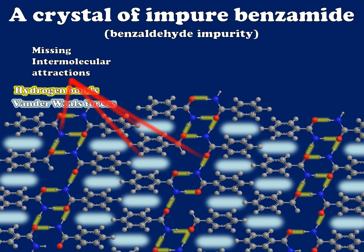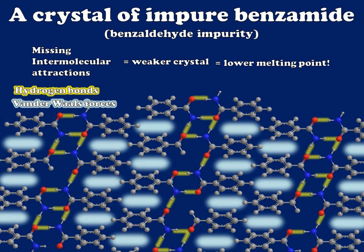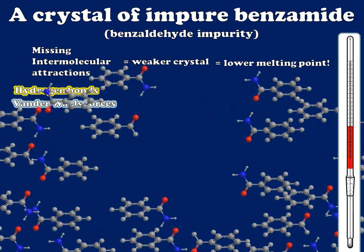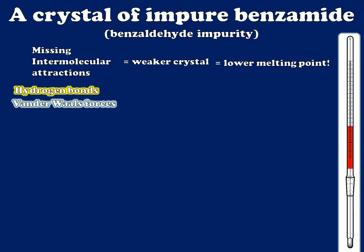Those missing intermolecular attractions translate to a weaker crystal. A weaker crystal means it takes less thermal energy to overcome the forces holding it together. So in this case I only need to heat my sample a small amount to get enough energy into those molecules to overcome all the forces — my sample has melted at a lower temperature. This is in general the way that impurities lead to melting point depression in organic crystalline materials.